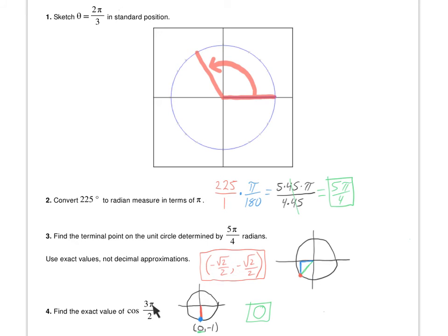Lastly, for this one, I want the exact value of this. To get the exact value of that, I want to find where 3π over 2 is. So 3π over 2 is 1 and a half π. So there I am. Then I want the coordinate for there. So that coordinate would actually be 0, negative 1.